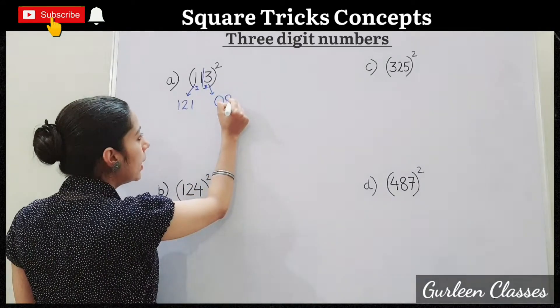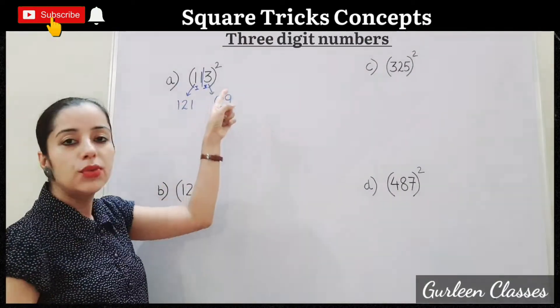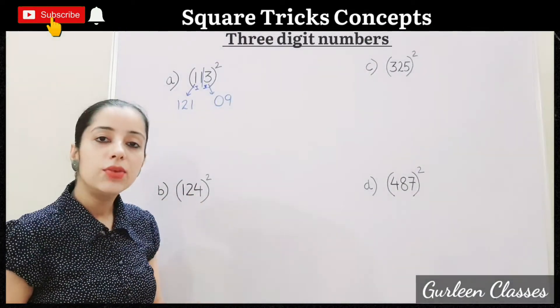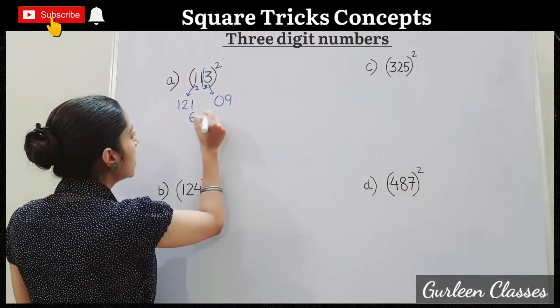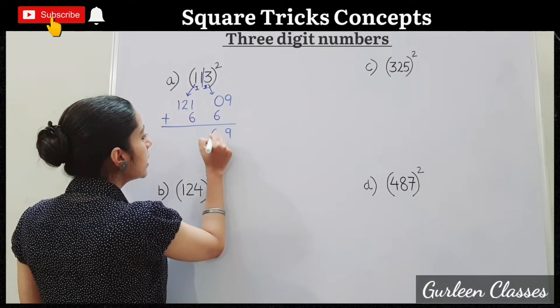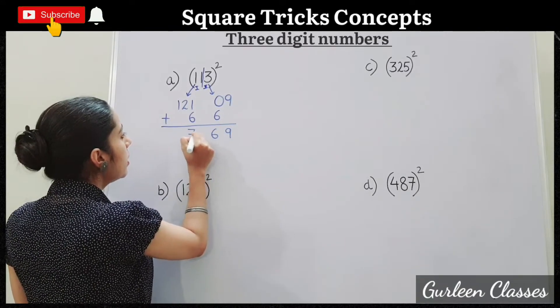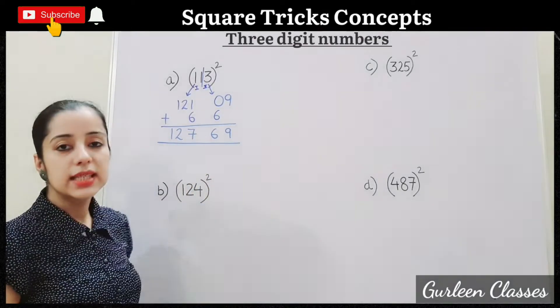Now second step we will multiply 11 into 3, 33. 33 into 2, 66. So write here 6, 6. Third step we will add. So 9, 6, 6 plus 1 is 7, 2, 1. Answer is 12,769.